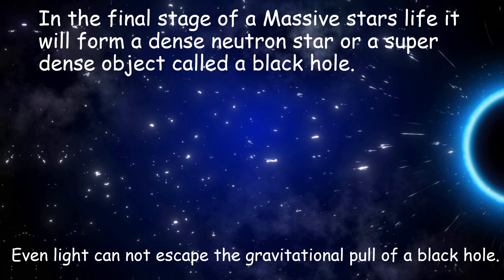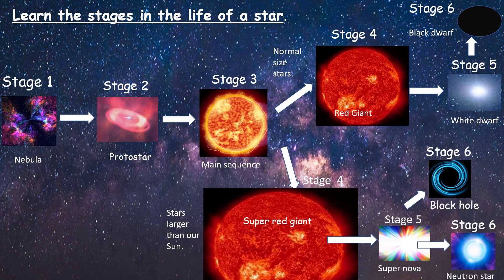We're now going to look at the overall map of the star's life. You need to learn this off by heart for your exams — it could well come up in your physics exam, either for AQA or IGCSE at Edexcel. We can see here that the stages of a star's life are exactly the same — stages 1, 2, and 3 — for both supermassive stars and stars the size of our sun. But it's at stage 4, when they enter the red giant or super red giant, that their lives go in different directions.